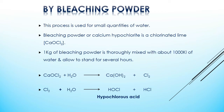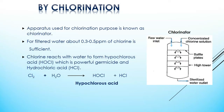As you can see here, bleaching powder introduces calcium into water, thereby making the water harder. This drawback can be avoided by using another method, that is, chlorination.